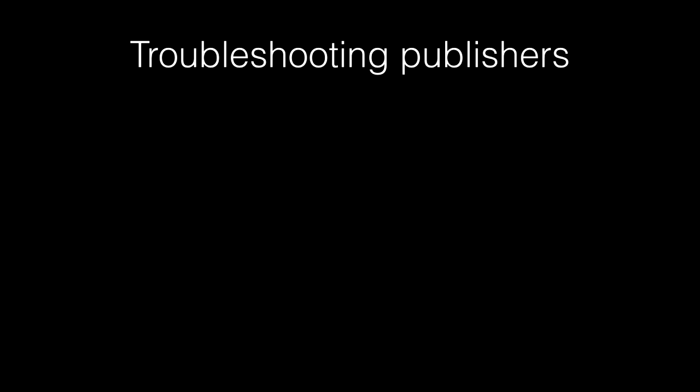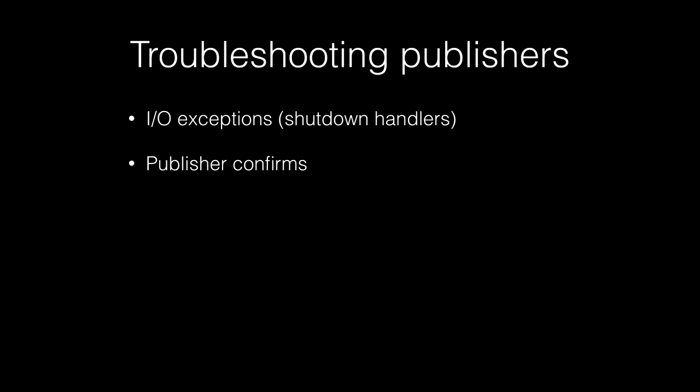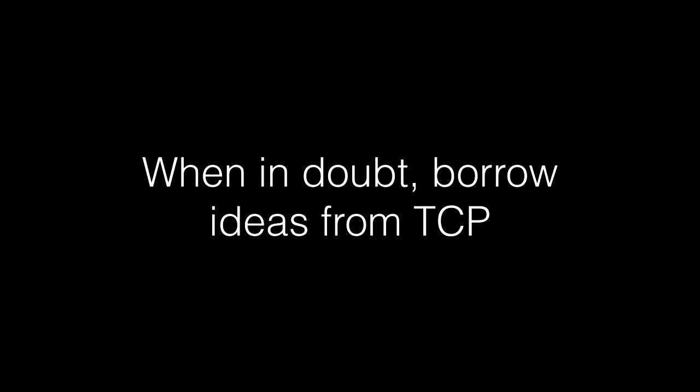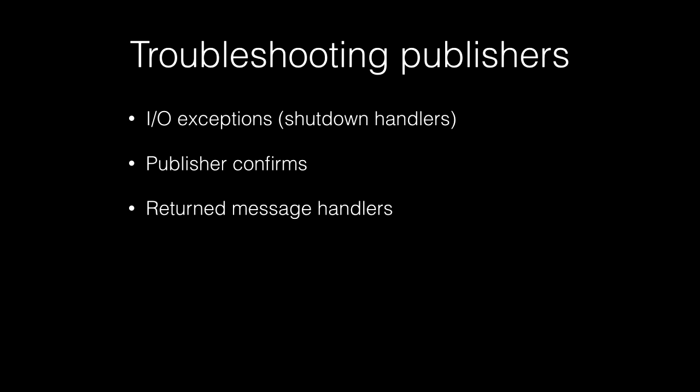Troubleshooting publishers — how do you do that? Look out for I/O exceptions; with just about any library or framework, those should be reasonably easy to notice and tell you something probably isn't quite right. In RabbitMQ, and multiple messaging technologies, there is something called publisher confirms. A publisher publishes something and then gets confirmation. This idea has been around for almost four decades — when in doubt, borrow ideas from TCP.